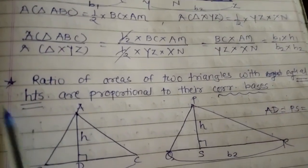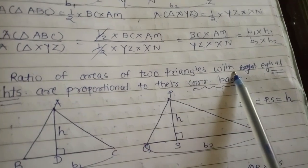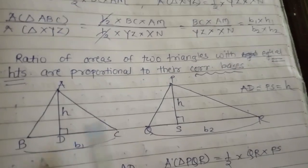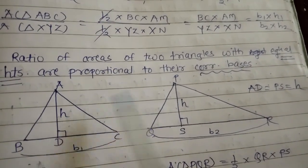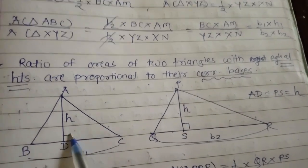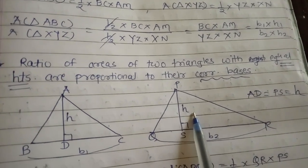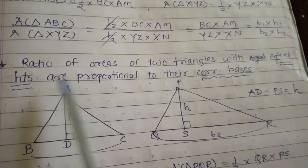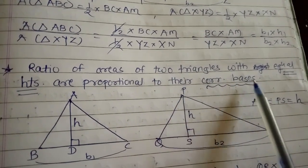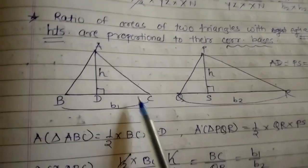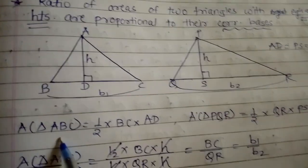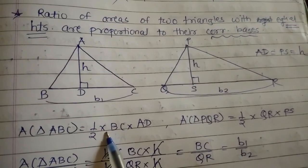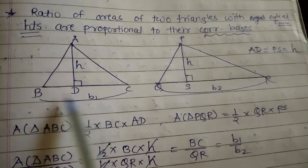The second statement: the ratio of area of two triangles with equal heights. See these two triangles having the same height — AD is H and PS is also H. The statement is: the ratio of area of two triangles with equal heights are proportional to their corresponding bases. Now take the ratio of the areas of these two triangles.